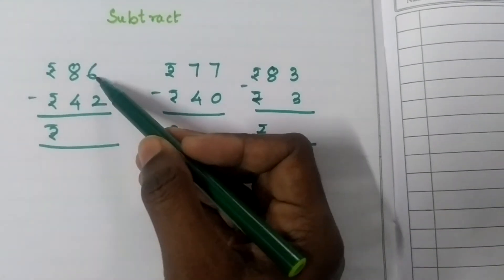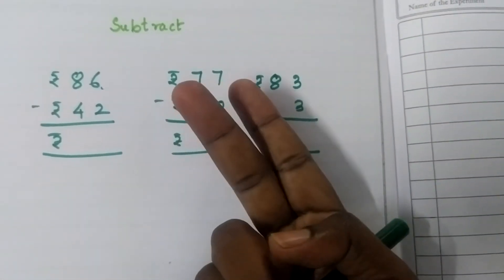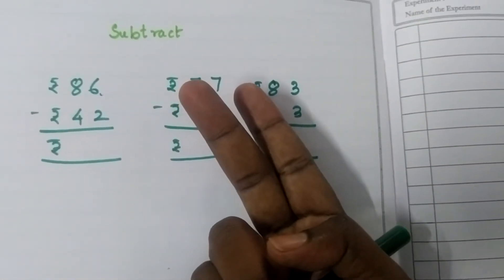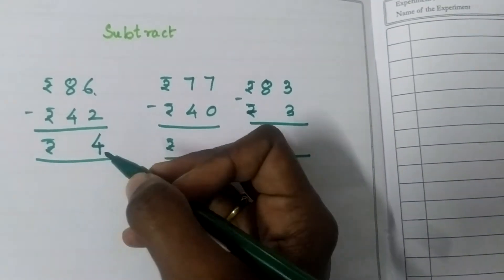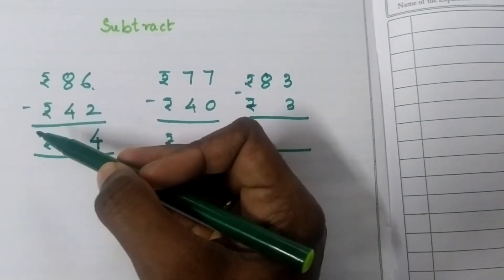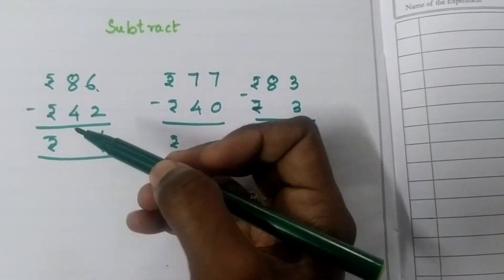So first we start from ones place, 6 minus 2. So 6 in the mind, 2 in the finger. Before 6: 5, 4. The only change is here we are adding the rupee symbol. This is compulsory because it is an amount.